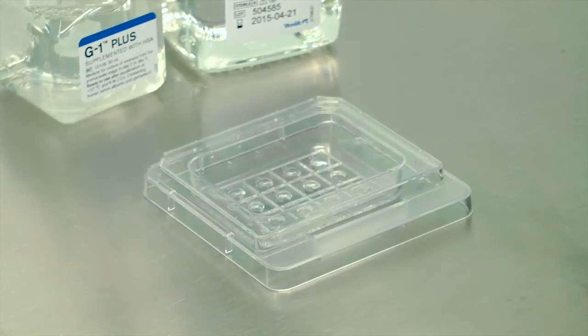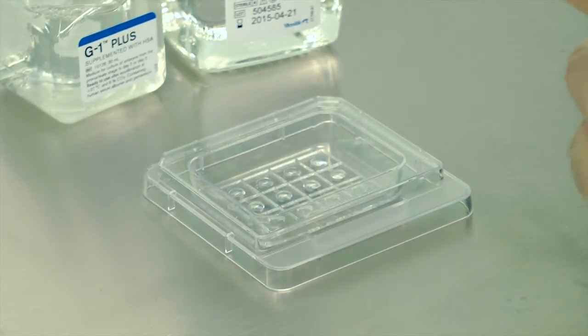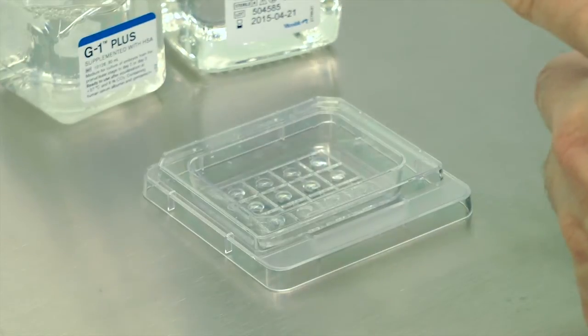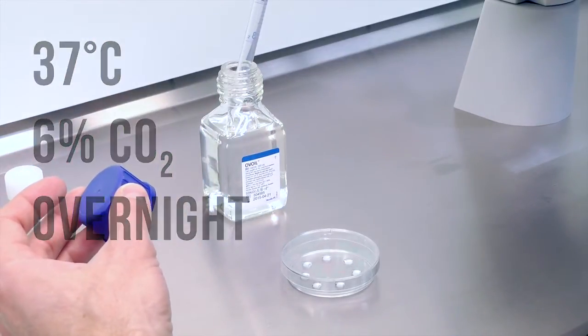Alternatively, if you use the micro droplet dish from Vitrolife, use 25 microliter droplets for the culture of one embryo per droplet. Cover these droplets with oil and equilibrate overnight at 6% CO2 and 37 degrees Celsius.